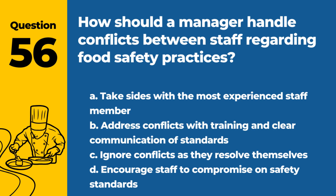Question 56. How should a manager handle conflicts between staff regarding food safety practices? A. Take sides with the most experienced staff member. B. Address conflicts with training and clear communication of standards. C. Ignore conflicts as they resolve themselves. D. Encourage staff to compromise on safety standards. Answer: B. Effective resolution involves reinforcing training and clearly communicating food safety standards to all staff.